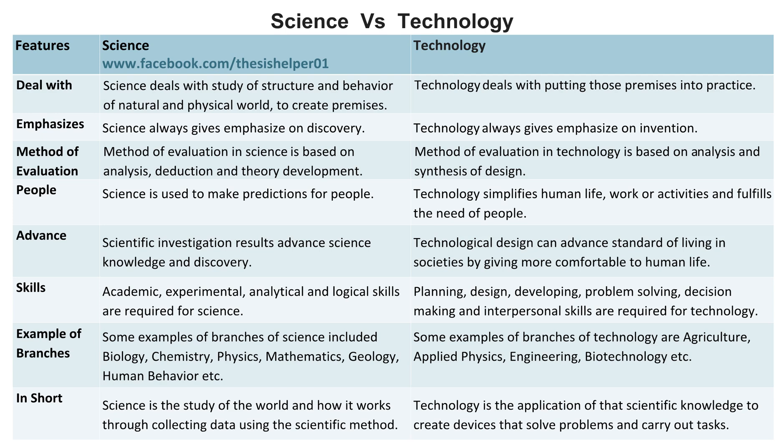Some examples of branches of science include biology, chemistry, physics, mathematics, geology, human behavior, etc., whereas some examples of branches of technology are agriculture, applied physics, engineering, biotechnology, etc.